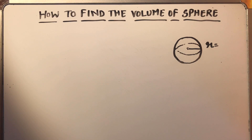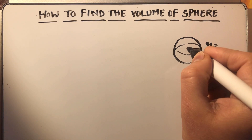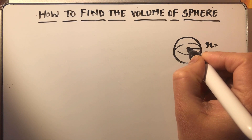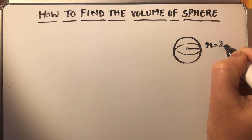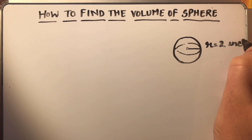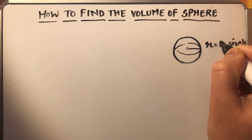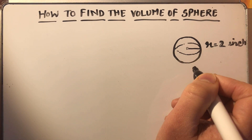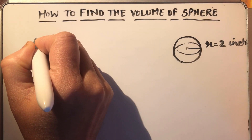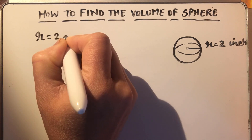Hello viewers, today we are going to learn how to find the volume of this sphere. So to find the volume of the sphere, we should know the radius of the sphere. So suppose let's take the radius of the sphere as 2 inches. So now we need to find the volume of this sphere whose radius is given as 2 inches.